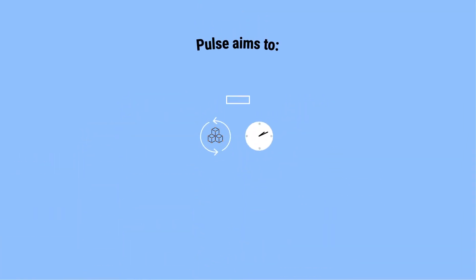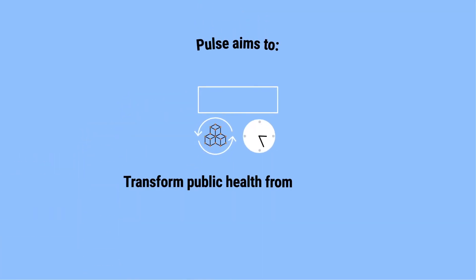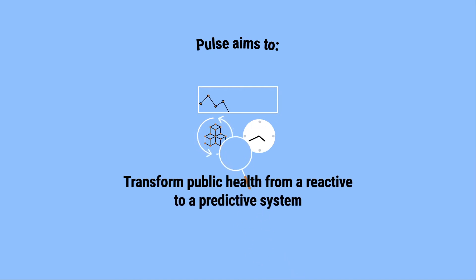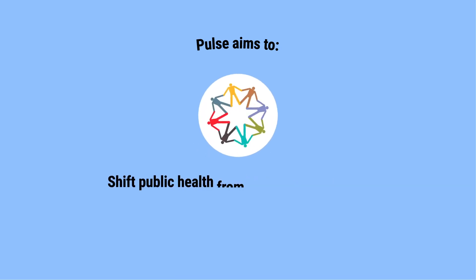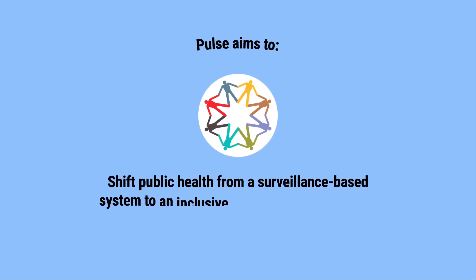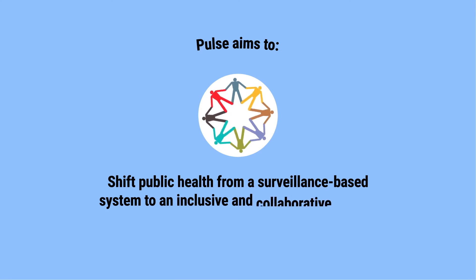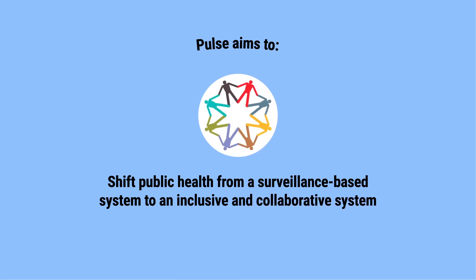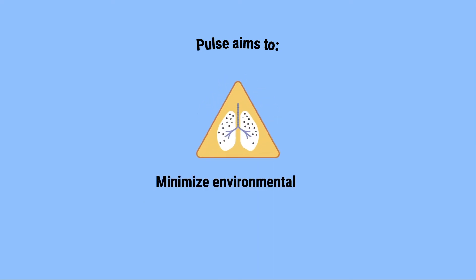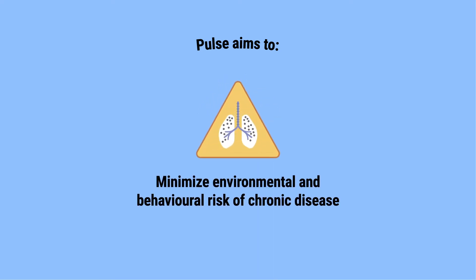Overall, Pulse aims to transform public health from a reactive to a predictive system using big data and IT tools and technologies. Shift public health from a surveillance-based system to an inclusive and collaborative system via citizen engagement and citizen science. Minimise environmental and behavioural risk of chronic disease incidence and prevalence via an integrated system of sensors, app and data analytics.